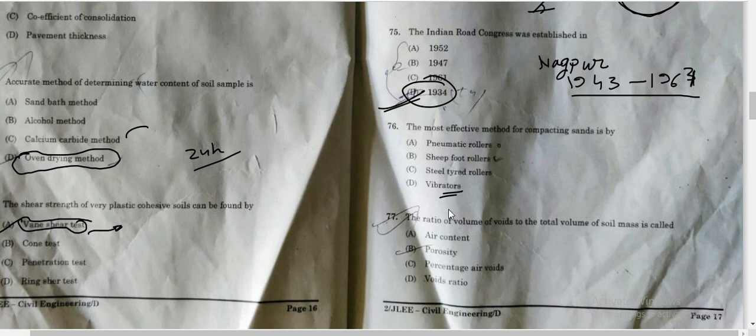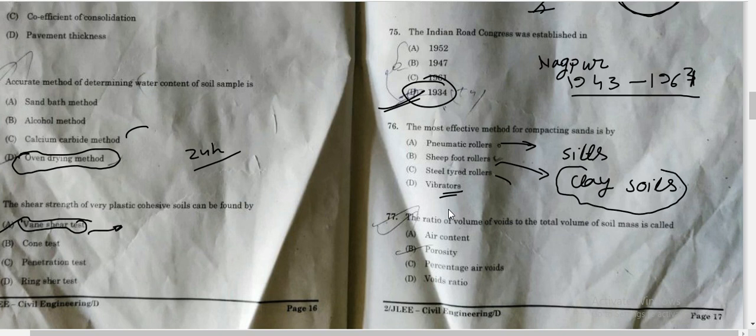Other options include pneumatic rollers, sheep foot rollers, and steel tire rollers. In case of smooth wheel rollers, they are used for rocks and gravels. Pneumatic rollers are preferred for silts and particles where plasticity is low. Sheep foot rollers are used for clay soils. Steel tire rollers are used in some conditions. So sheep foot rollers are used for clay soil, vibratory rollers are used for sandy soil, and pneumatic rollers are used for silts.